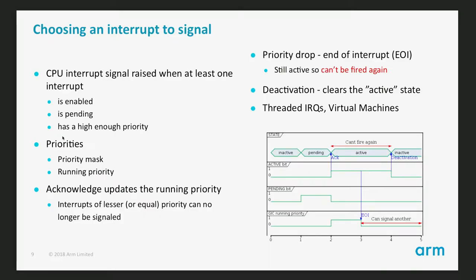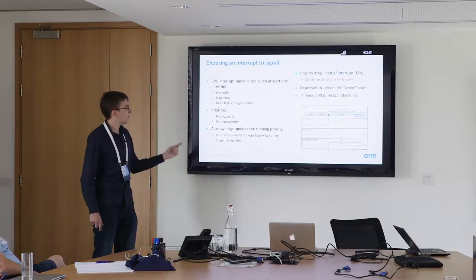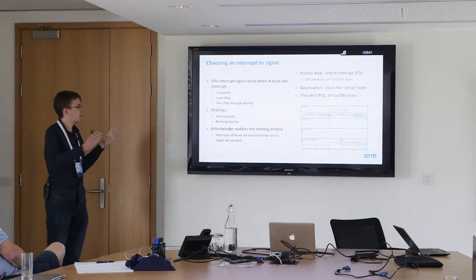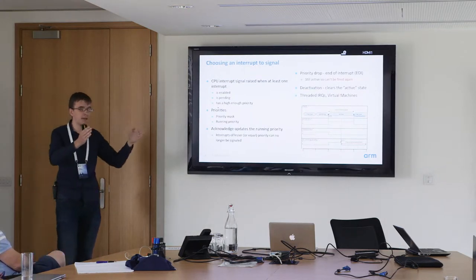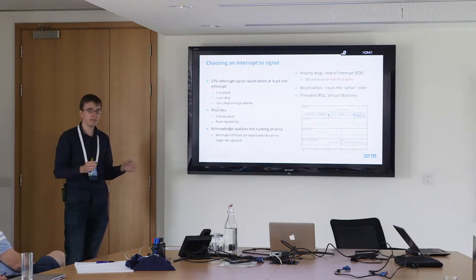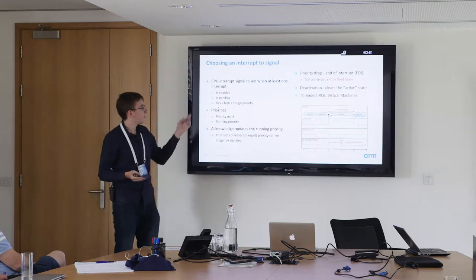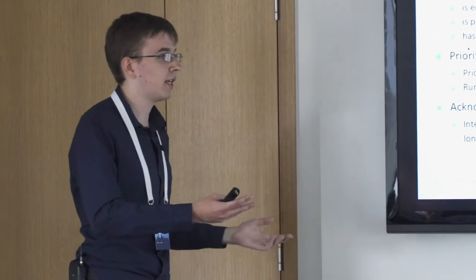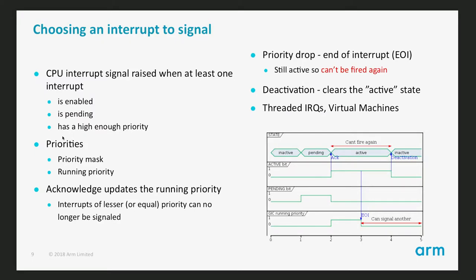More importantly we have the running priority. When a CPU acknowledges an interrupt it updates the running priority to the priority of that interrupt, meaning we can never signal interrupts of lesser or equal priority after that. We can also split the deactivation phase into two steps: a priority drop — clearing the running priority — which allows the GIC to signal more interrupts to the CPU while the active state remains set, preventing this interrupt from being signaled again. Then when done, the CPU deactivates the interrupt, clearing the active state.